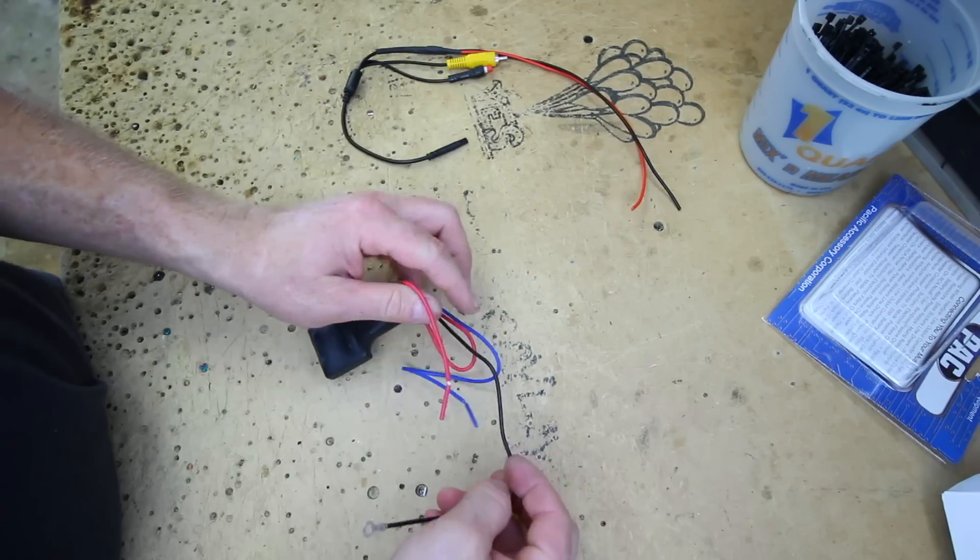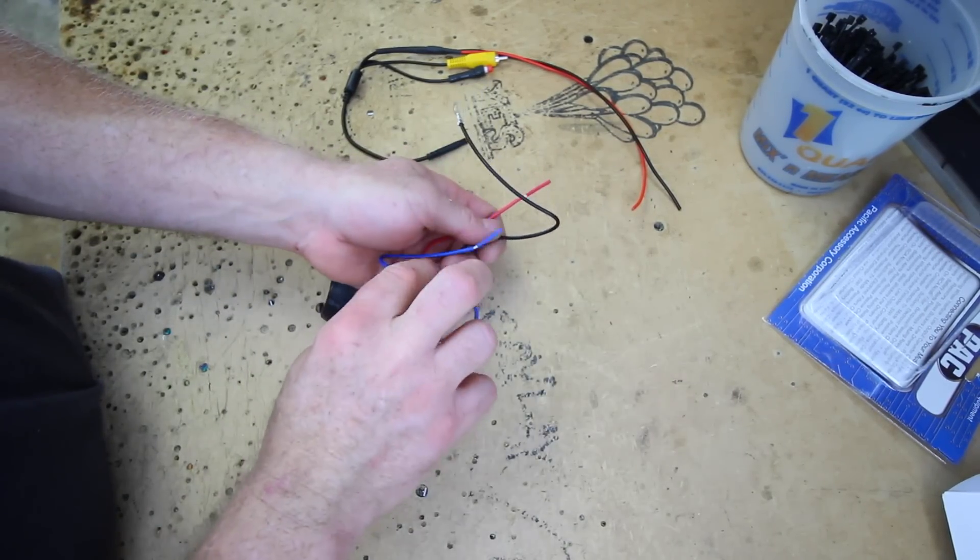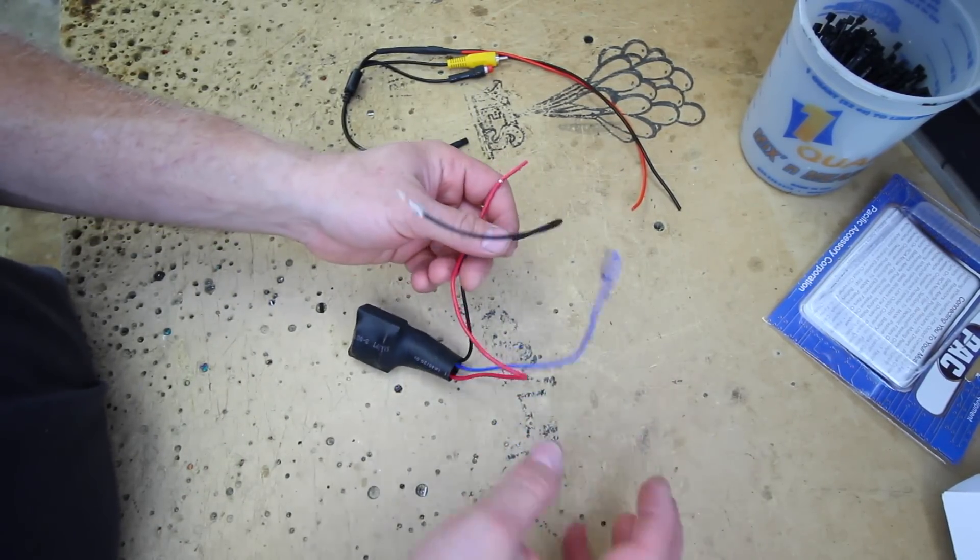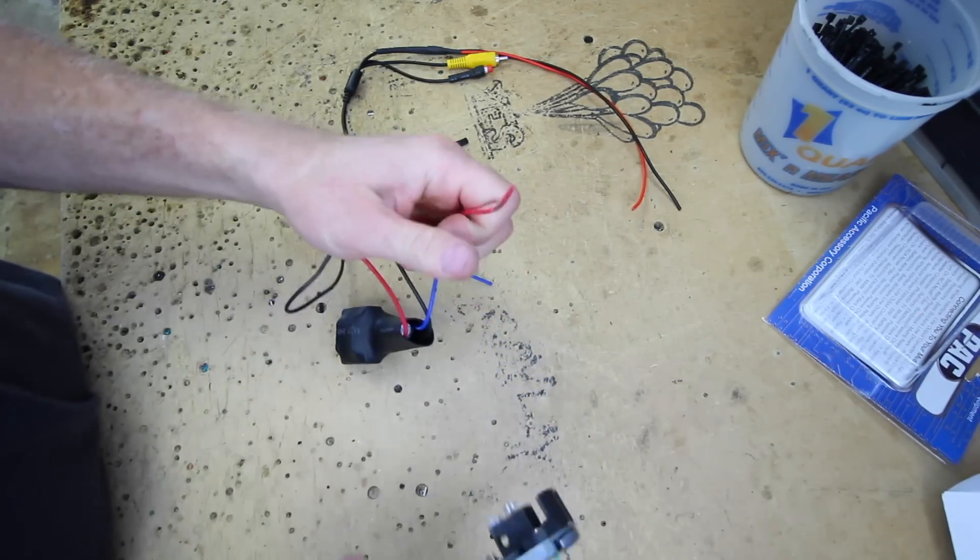Alright, so this has a simple three-wire hookup. You have your accessory in, your ground, and the blue is your accessory out. So what you're going to do is go ahead and strip these off here.